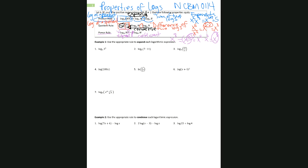Now let's get to the examples. For example one, we're going to be expanding. The first thing we see is 9 as the exponent of 3 — 3 is the argument, the number you're taking the log of. Using the power property, I will bring this 9 to the front so it becomes the coefficient of my logarithmic expression. So this will be 9 times the log of 3, base 6.